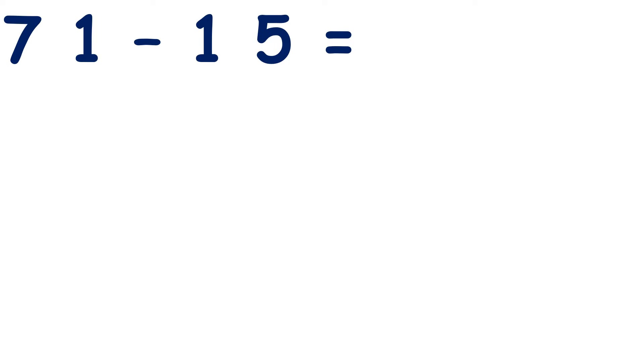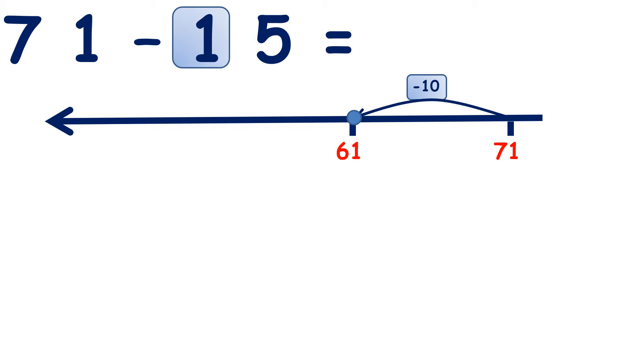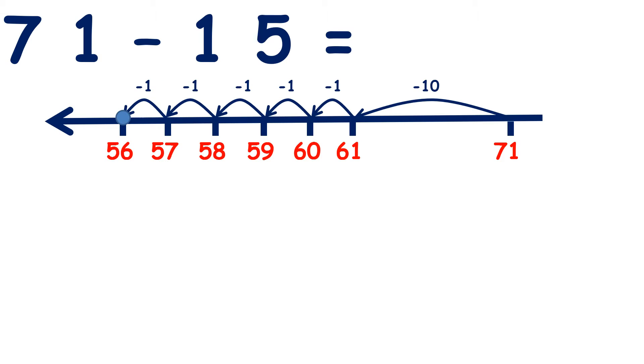Now again we're going to answer and check using the inverse operation. We have a subtraction question here, so we're going to check using addition. But first let's answer 71 minus 15. Take away 10 and we have 61, that's our 1 ten dealt with. Now we need to take away our five units. If we count back five from 61 we get 60, 59, 58, 57, 56. So we've counted back five to get 56.